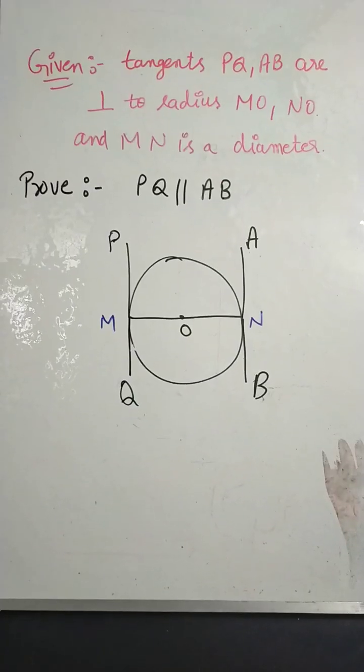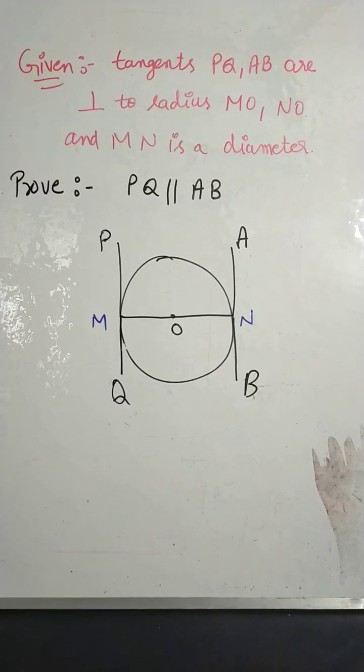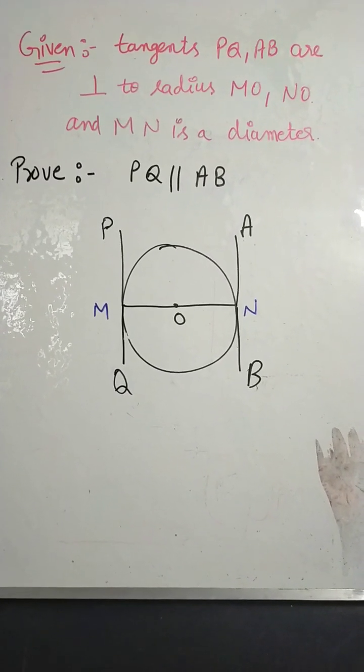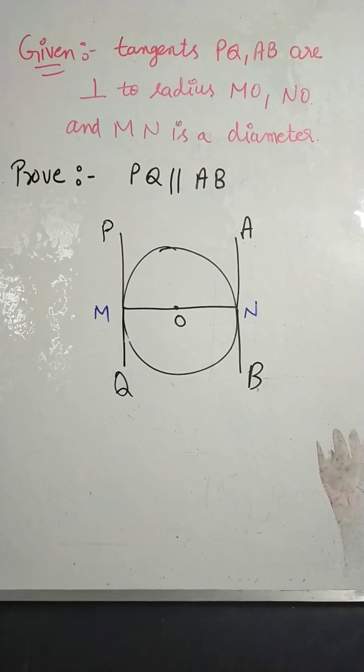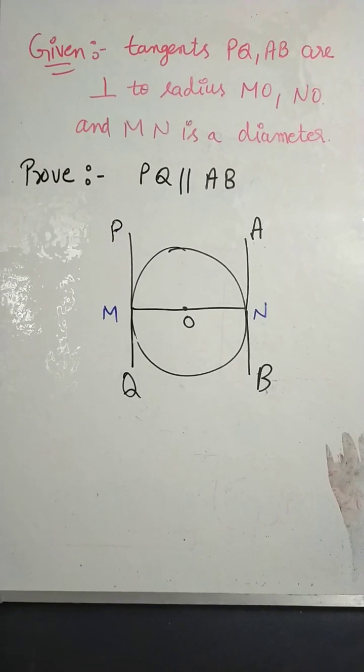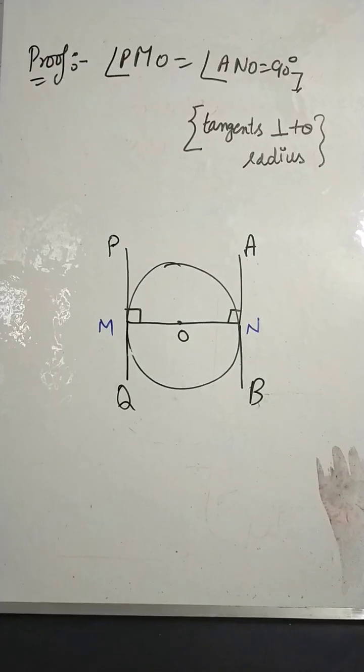First, we will mention the given information: tangents PQ and AB are perpendicular to radius OM and ON, and MN is a diameter. What we need to prove is PQ parallel to AB. Now let's come to the proof.